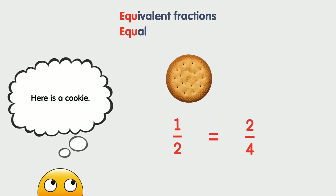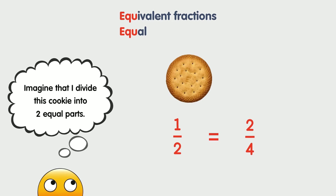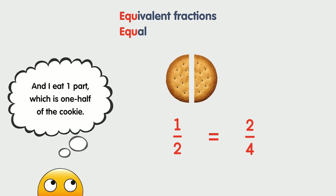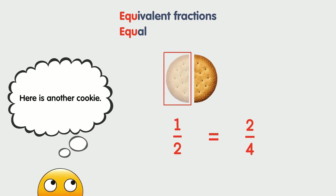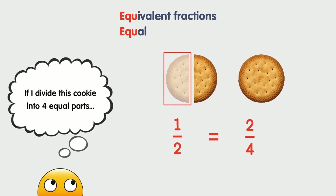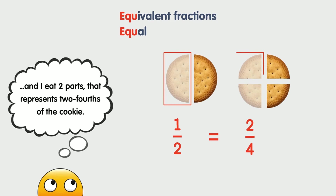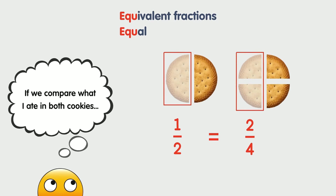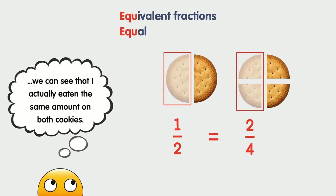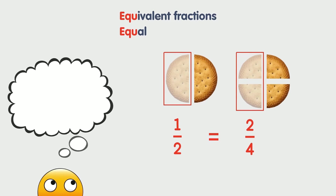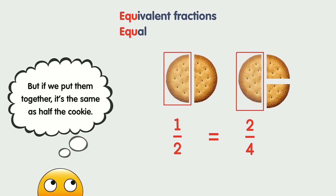Here is a cookie. Imagine that I divide this cookie into two equal parts and I eat one part, which is one half of the cookie. Here is another cookie. If I divide this cookie into four equal parts and I eat two parts, that represents two fourths of the cookie. If we compare what I ate on the first cookie to what I ate on the second cookie, we can see that I actually ate the same amount on both, because in the second cookie the two parts together are the same as half the cookie.